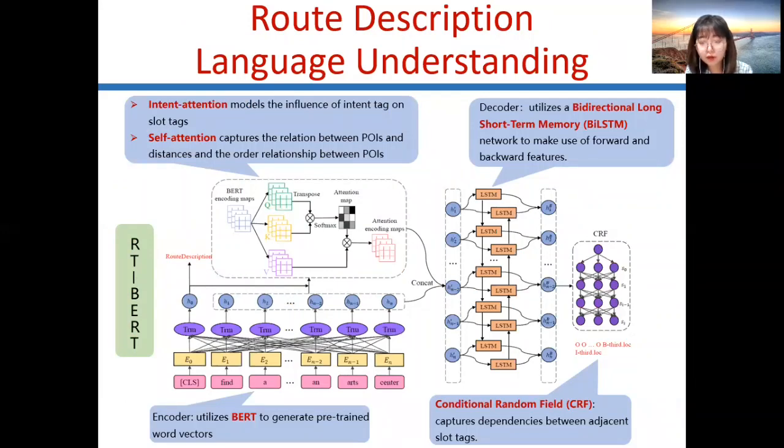For route description language understanding, we propose route template-based BERT, based on an encoder-decoder framework enabling joint intent classification and slot filling. Encoder utilizes BERT to generate pre-trained word vectors. We incorporate intent attention and self-attention. Intent attention models the influence of intent tags on slot tags. Self-attention captures the relation between POIs and distances and the order relationship between POIs.